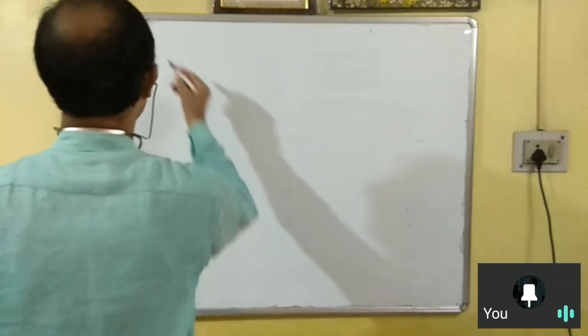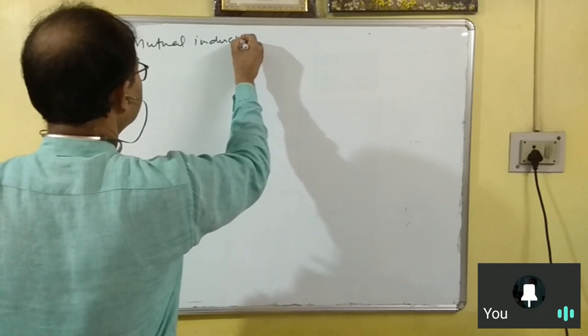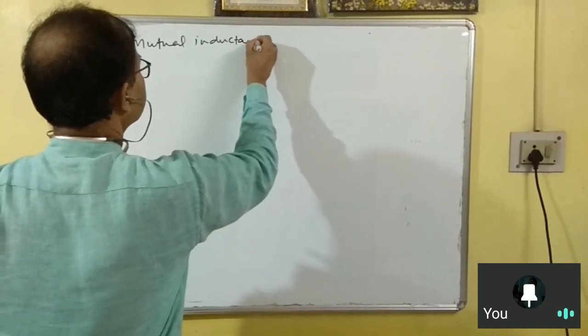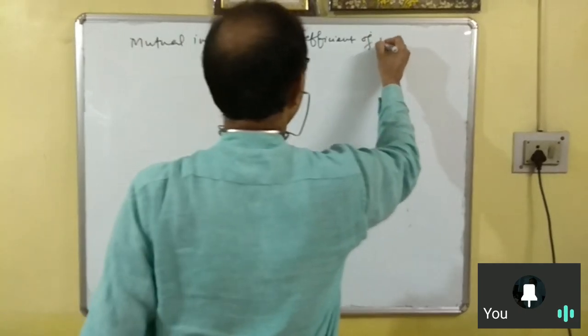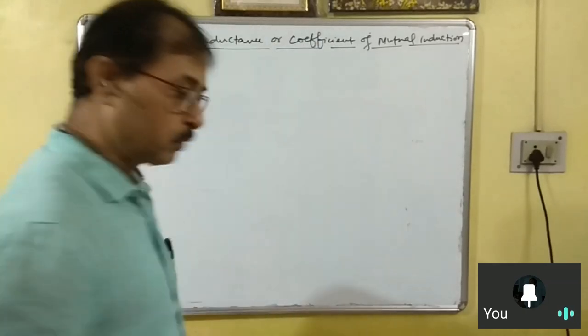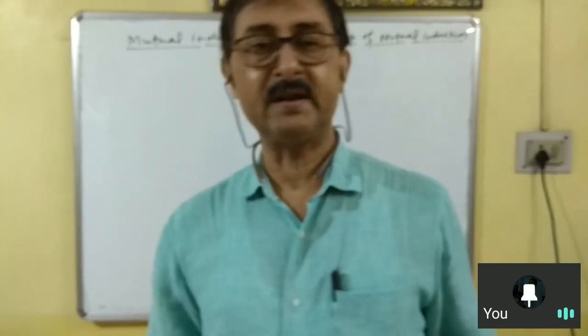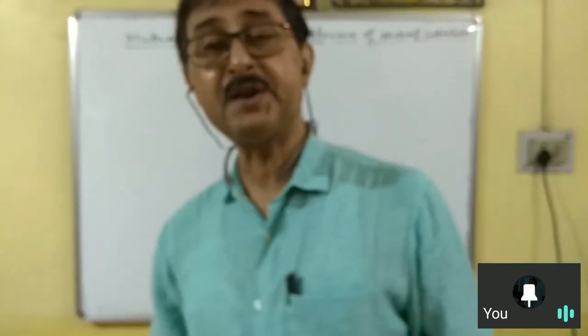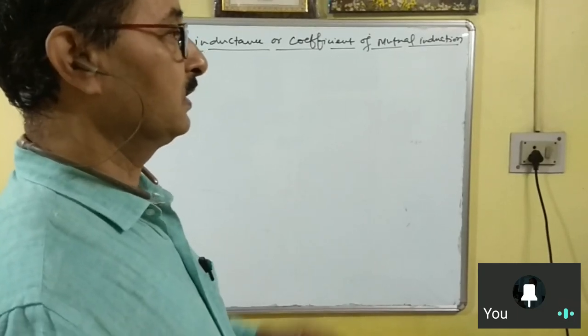The topic is mutual inductance. Mutual inductance, also called the coefficient of mutual induction, depends upon two factors: first, the geometry of the two coils, and second, the number of turns in the primary and secondary coils. The third factor is the orientation between the coils — how your coils are arranged also matters.